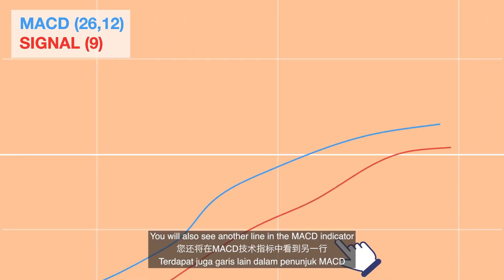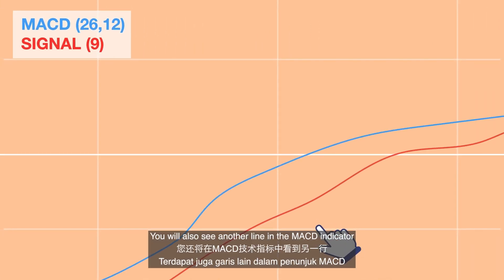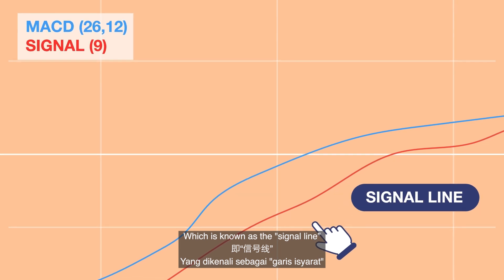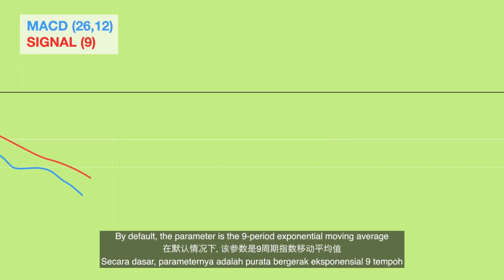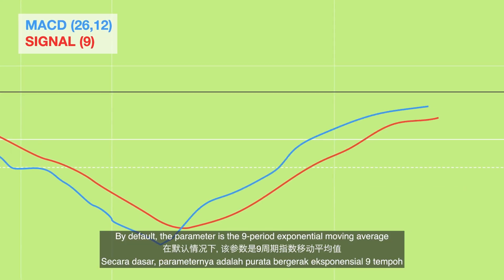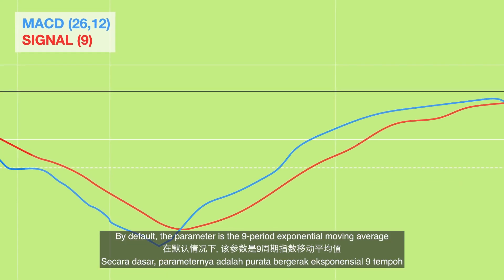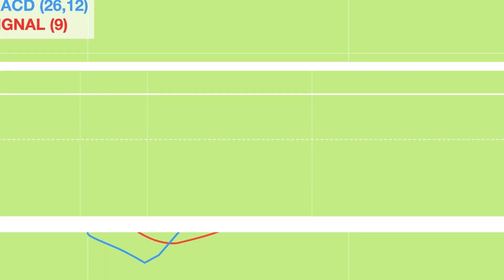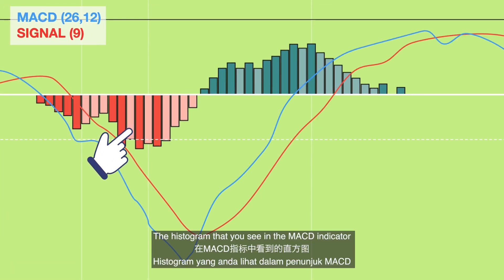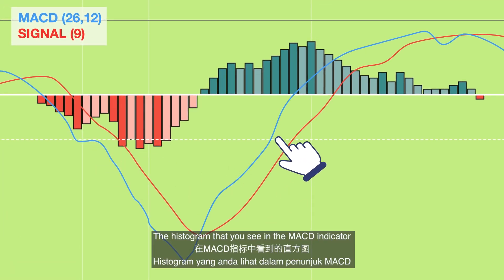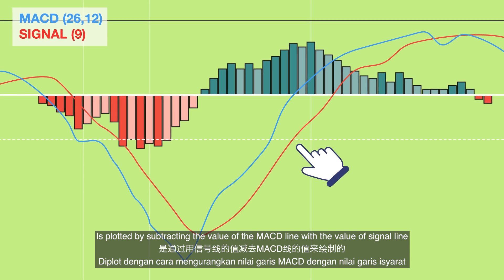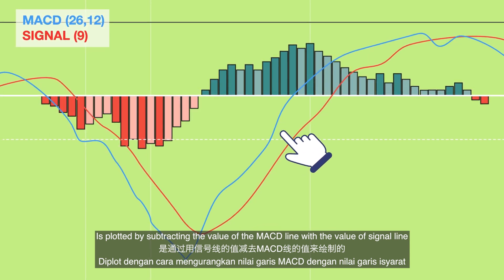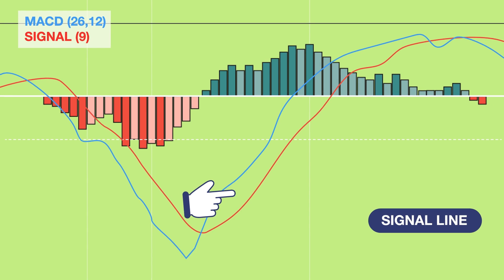You will also see another line in the MACD indicator, which is known as the signal line. By default, the parameter is the 9-period exponential moving average. The histogram that you see in the MACD indicator is plotted by subtracting the value of the MACD line with the value of the signal line.